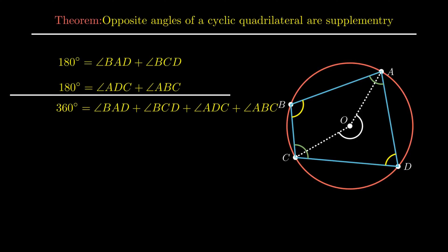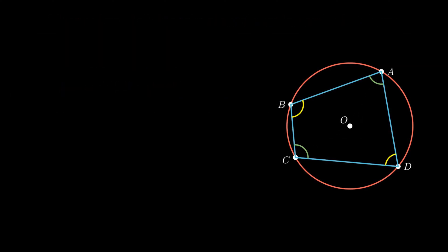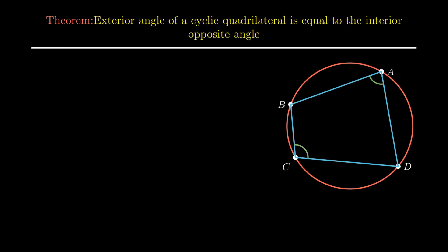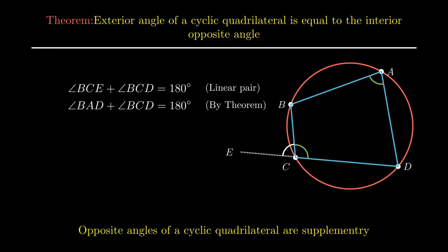Hence, the sum of all interior angles of a cyclic quadrilateral is proved to be 360 degrees. Moving on to the next theorem. The theorem states that the exterior angle of a cyclic quadrilateral is equal to the interior opposite angle. To prove this, extend segment CD of the cyclic quadrilateral to point E, resulting in the formation of exterior angle BCE. Now, the sum of angle BCE and angle BCD equals 180 degrees, as adjacent angles on a straight line form a linear pair. Also, the sum of angle BAD and angle BCD is 180 degrees, as opposite angles of a cyclic quadrilateral are supplementary.